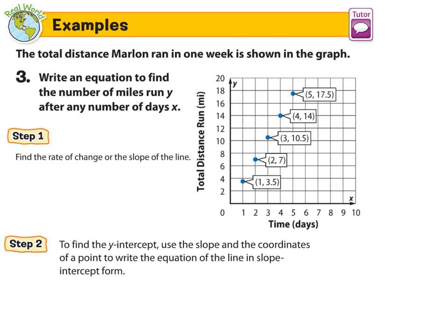Another real-world example: the total distance Marlon ran in one week is shown in the graph. Write an equation to find the number of miles run, which is going to be y, after any number of days x. So here we can see that we have five different points, all the way from one to five for the x, and it goes from 3.5 all the way to 17.5 on the y.